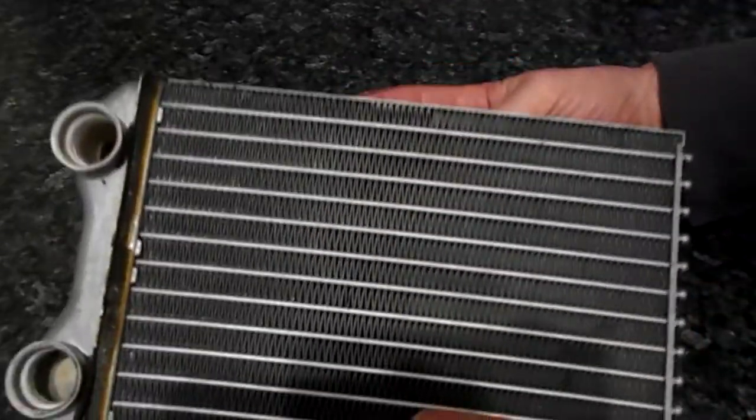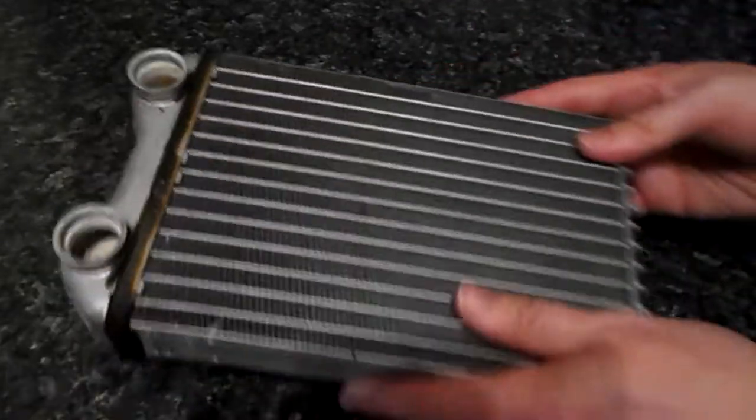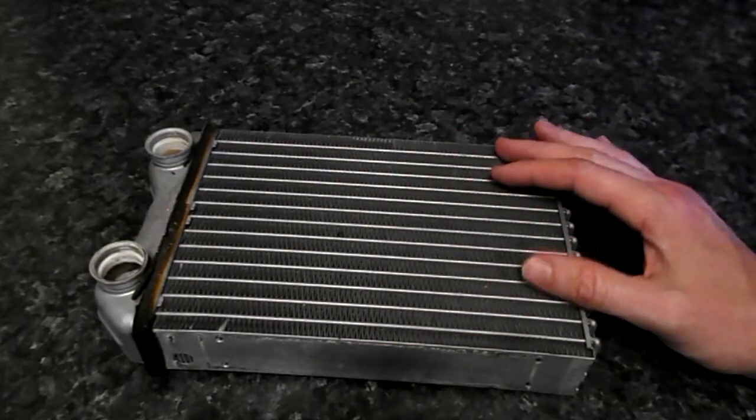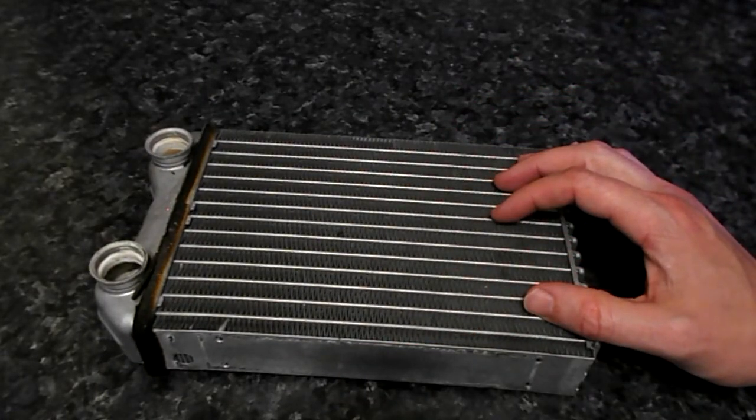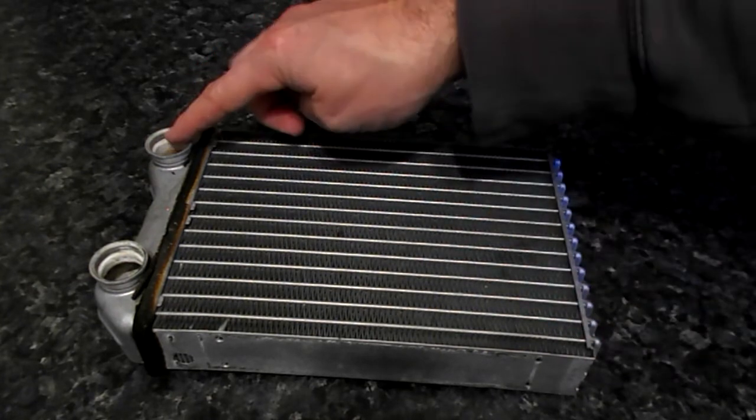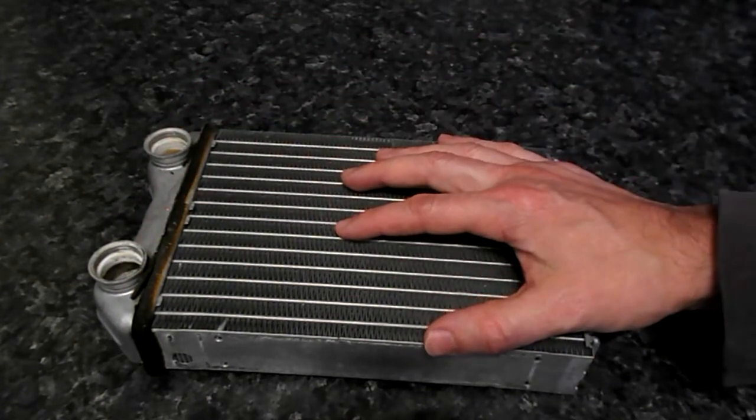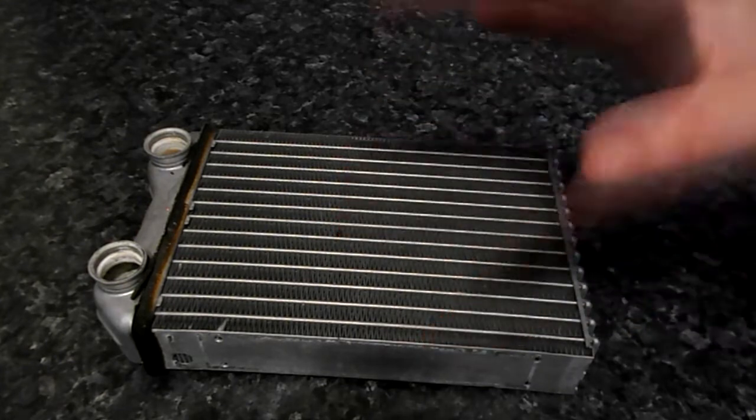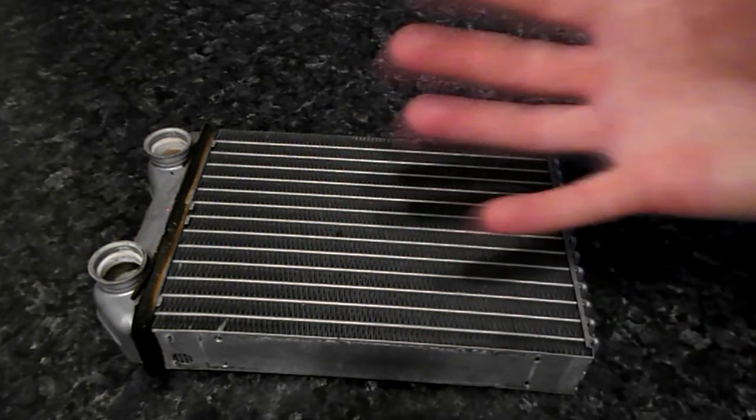There will also be a fan that sits behind the heater matrix which blows hot air into the cabin. There will also be controls inside the cabin which turn on and off the coolant going in and out of the matrix, as well as a control for the speed of the fan to determine how much hot air will be blown in.